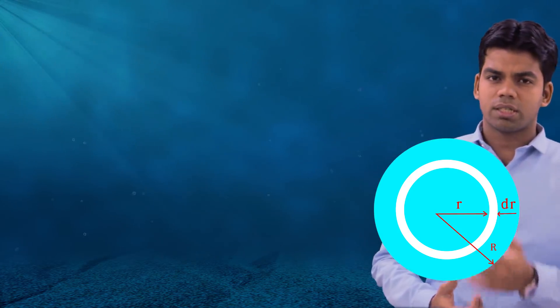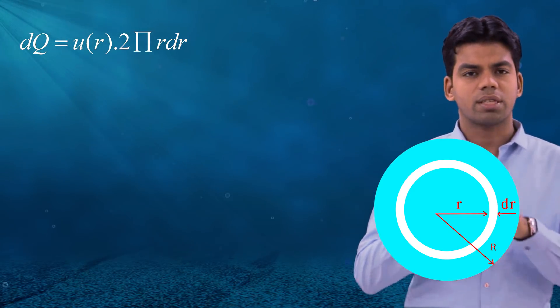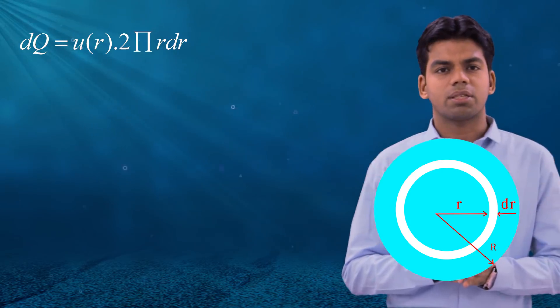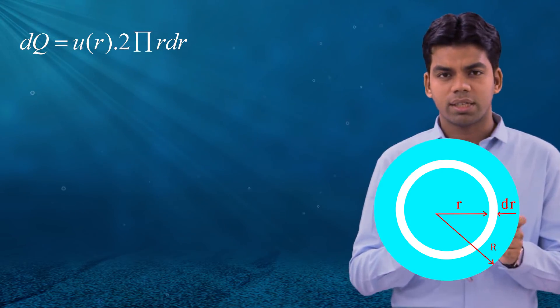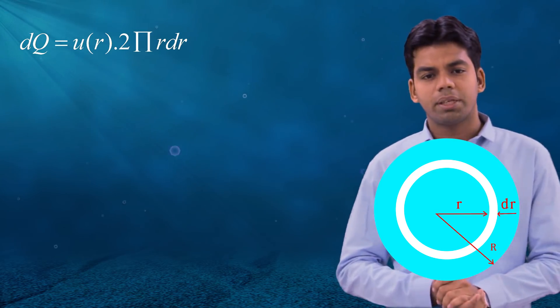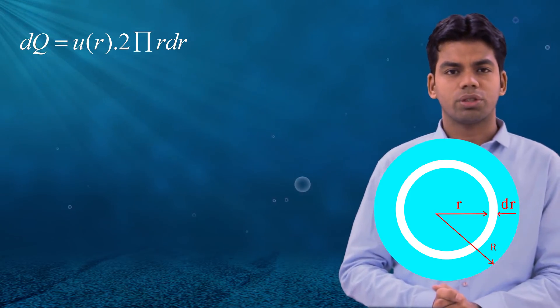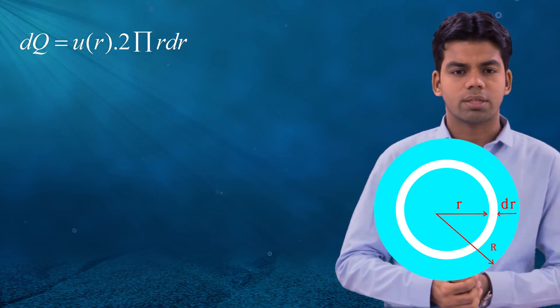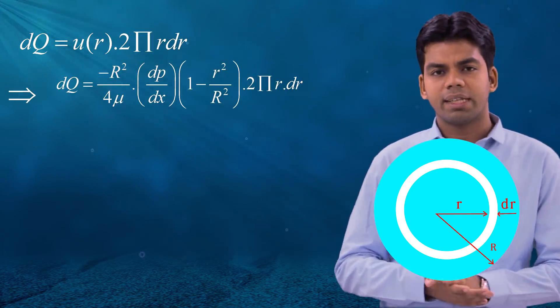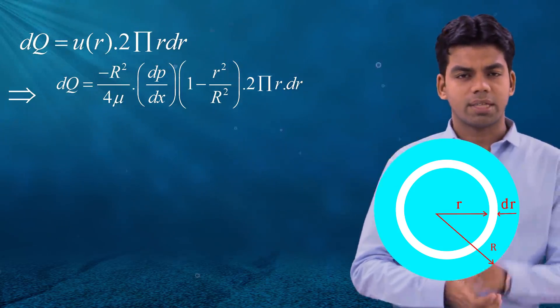The small discharge dq equals velocity u(r) multiplied by the area of the strip. The circumference of the strip is 2πr, so the area is 2πr dr. Therefore dq = u(r) × 2πr dr = −(R²/4μ)(dp/dx)(1 − r²/R²) × 2πr dr.